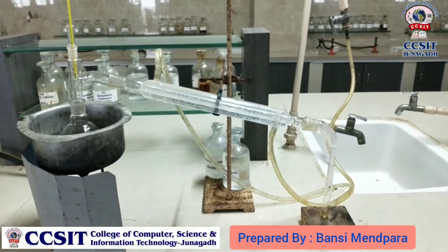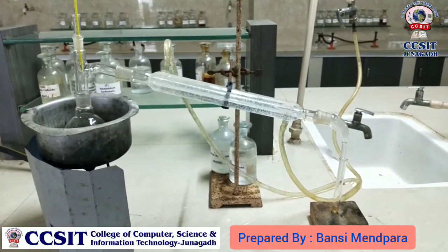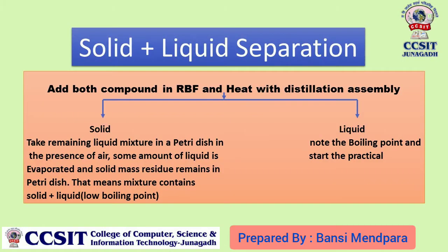What do we do with the solid? There is a little bit of solvent to keep it. What do we do in the petri dish? We can easily get the low boiling point. So we can understand that we have a solid-liquid present, and we have a liquid compound. This low boiling point is obtainable; we cannot get the high boiling point.